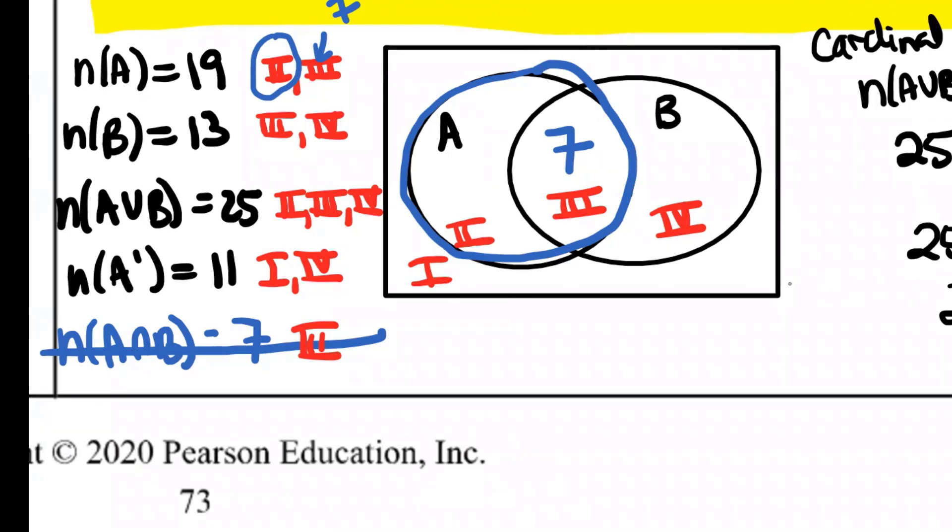If there are 19 all together in set A and we know that seven of them are in region three, how many must be in region two? Very good. There are 12. Why? 19 in all of set A minus the seven we've already placed leaves 12 that are in region two. Do you see where I'm getting that one from? So then I've used that fact and I'm going to cross it off my list.